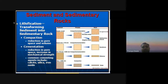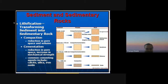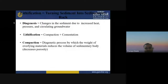Lithification involves compaction — the reduction in pore space and volume — and cementation, which reduces pore space and increases mechanical strength. Common cementing agents include calcite, silica, and iron oxide. Lithification is the process of turning sediment into sedimentary rock.